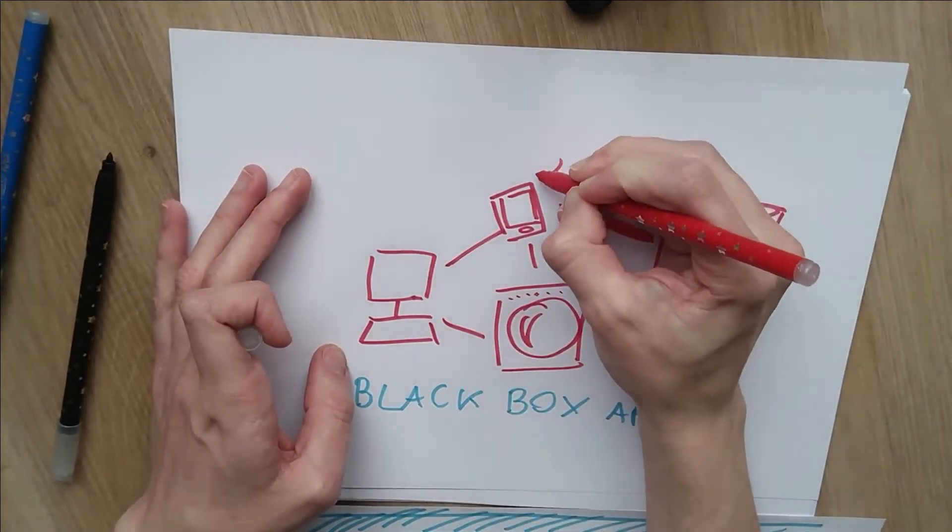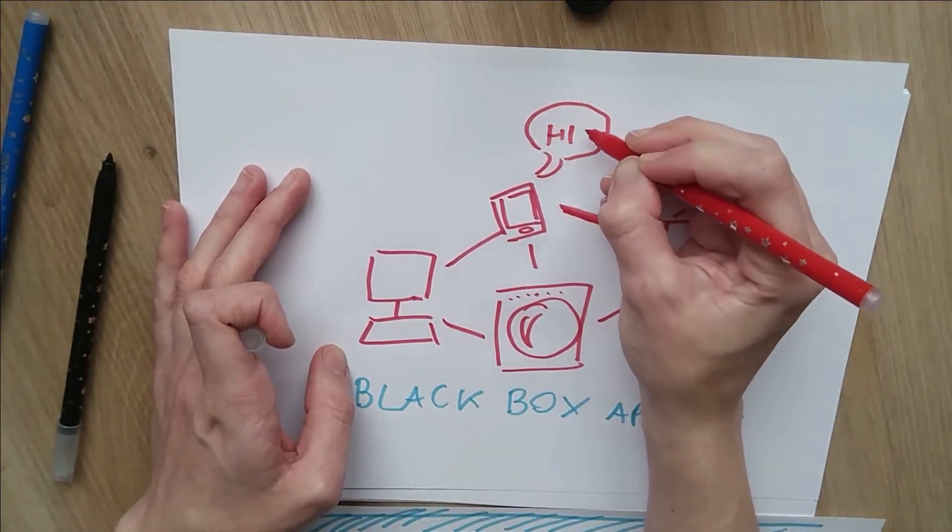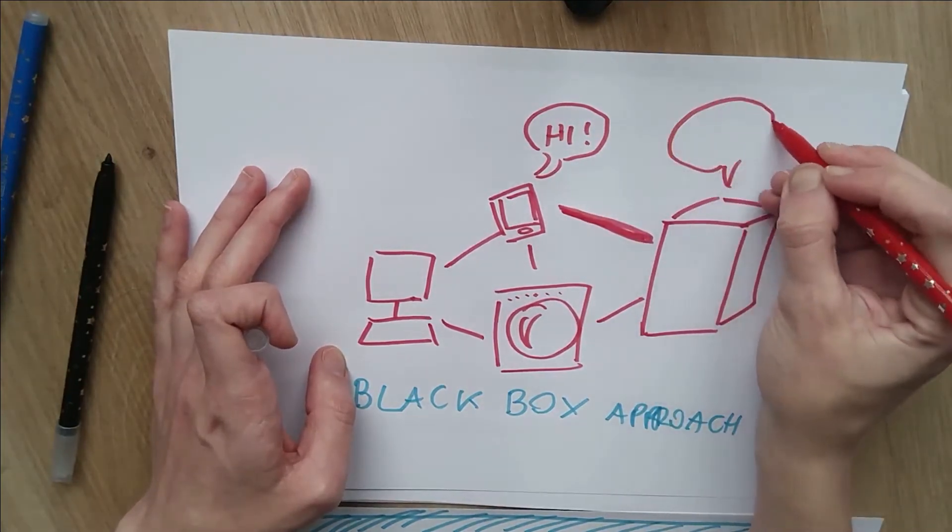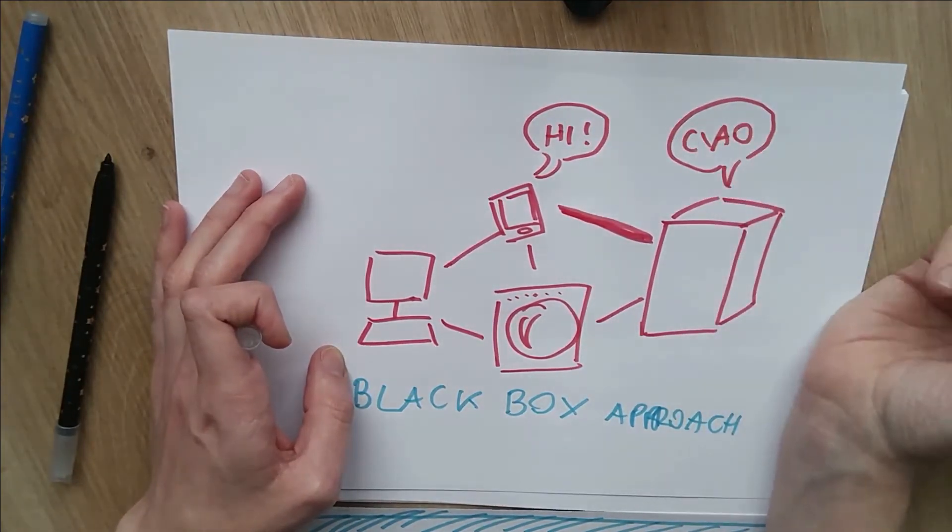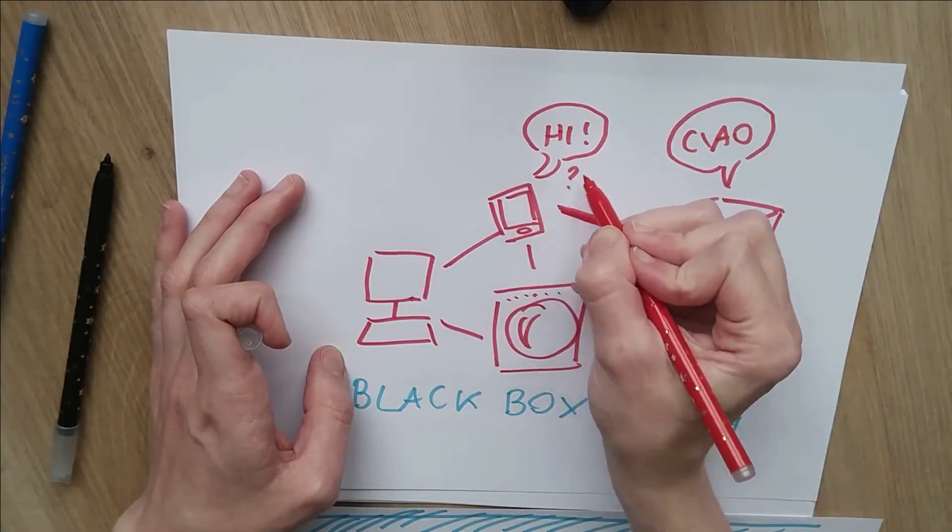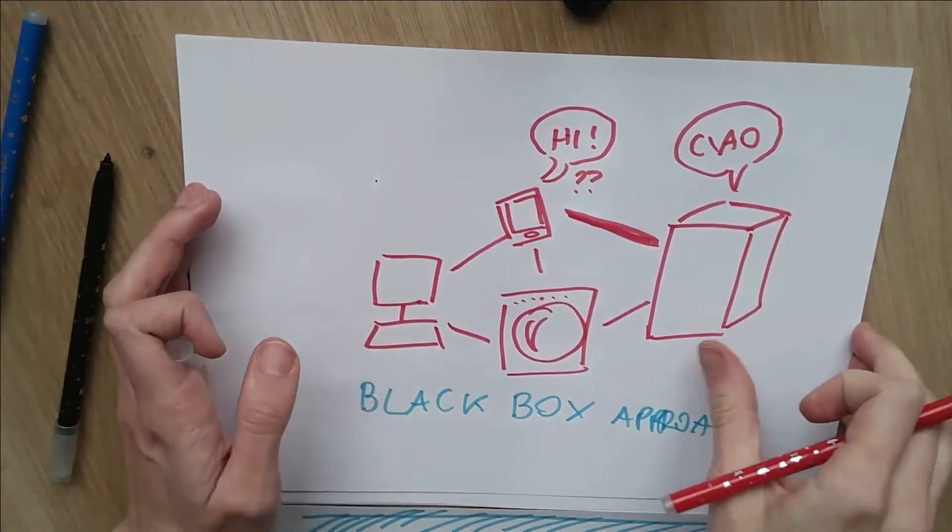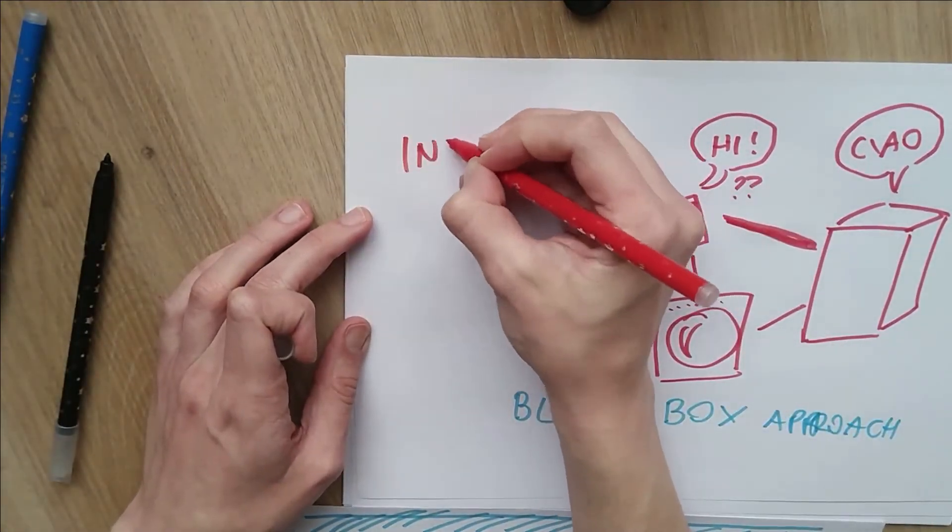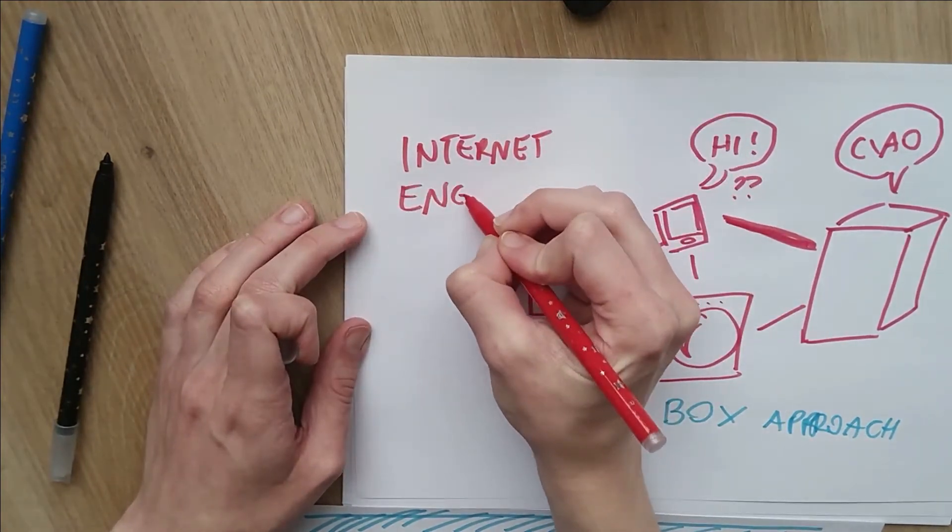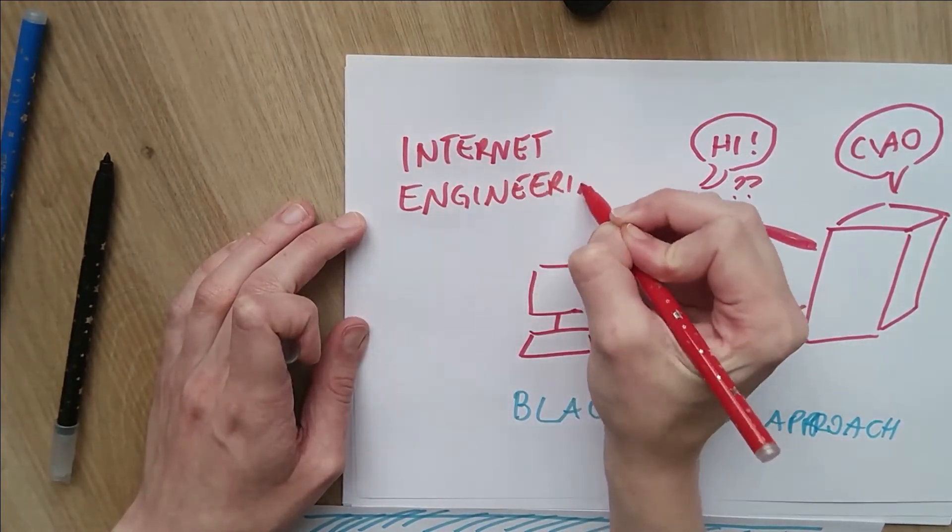All of them might want to communicate one with the other to do and implement some application. In this case, how do we do it though? Like the single systems work but they might be working in different languages. One might be talking in English and the other one might be speaking Italian and they're not really gonna understand each other unless there is some intermediate layer of protocols.